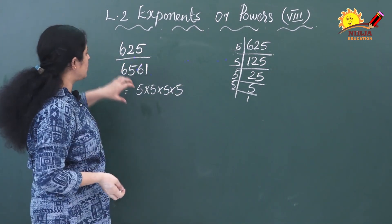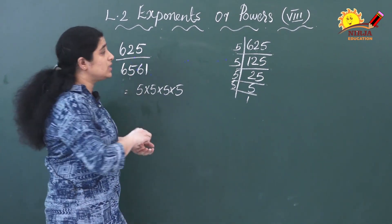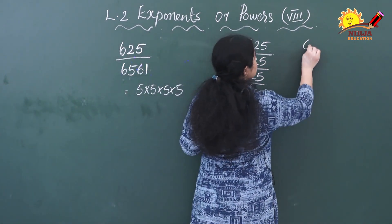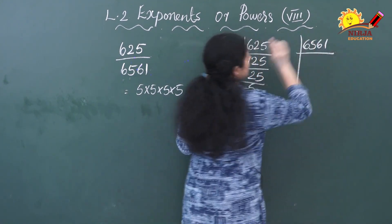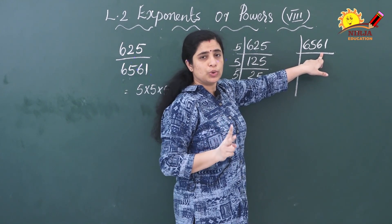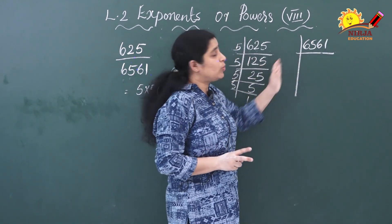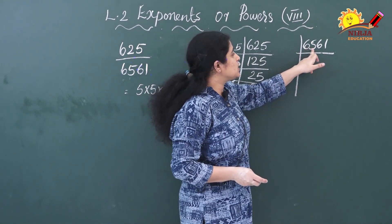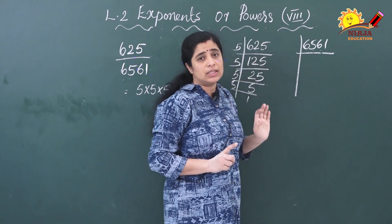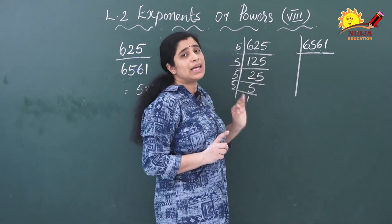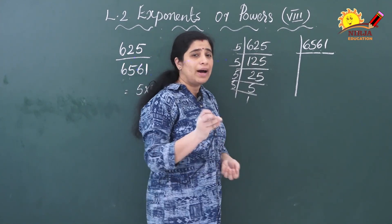Now we have to do the prime factorization of 6561. This can't be divisible by 2 because the number in the ones place is not even. We will add the digits: 6 + 5 = 11, 11 + 6 = 17, 17 + 1 = 18. That means we get a multiple of 3, so we can divide this number by 3.